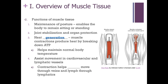Muscles also assist with cardiovascular and lymphatic vessels. The skeletal muscle alongside a vein or lymphatic vessel will contract and help move fluid — sometimes blood, other times lymph — through that vessel. Valves can close to prevent backward flow, ensuring fluid moves in one direction. The key point is that skeletal muscle contracting and putting pressure on those vessels also helps move that fluid in one direction.